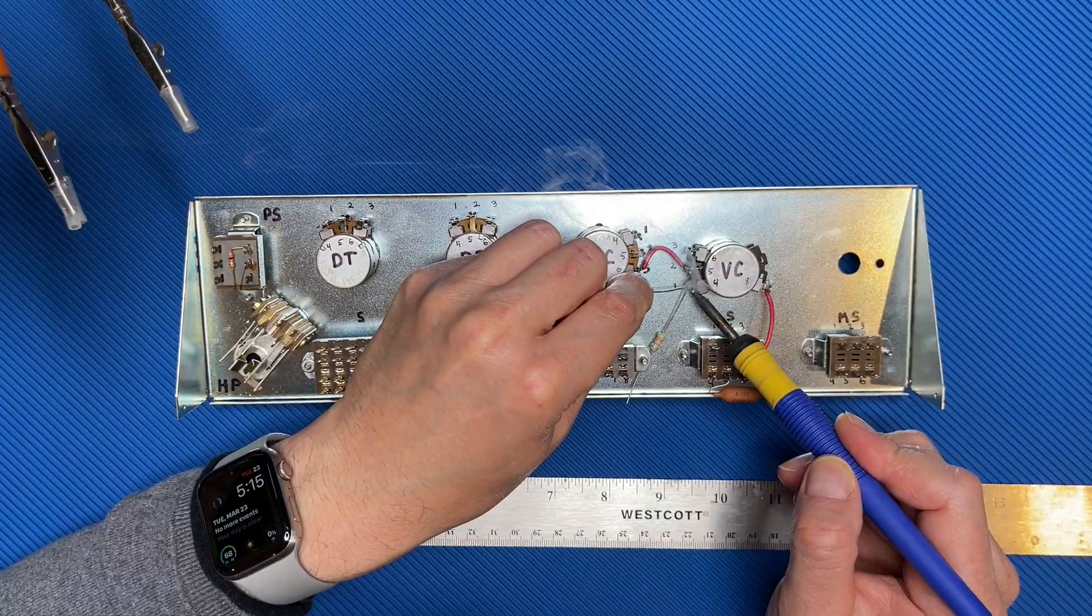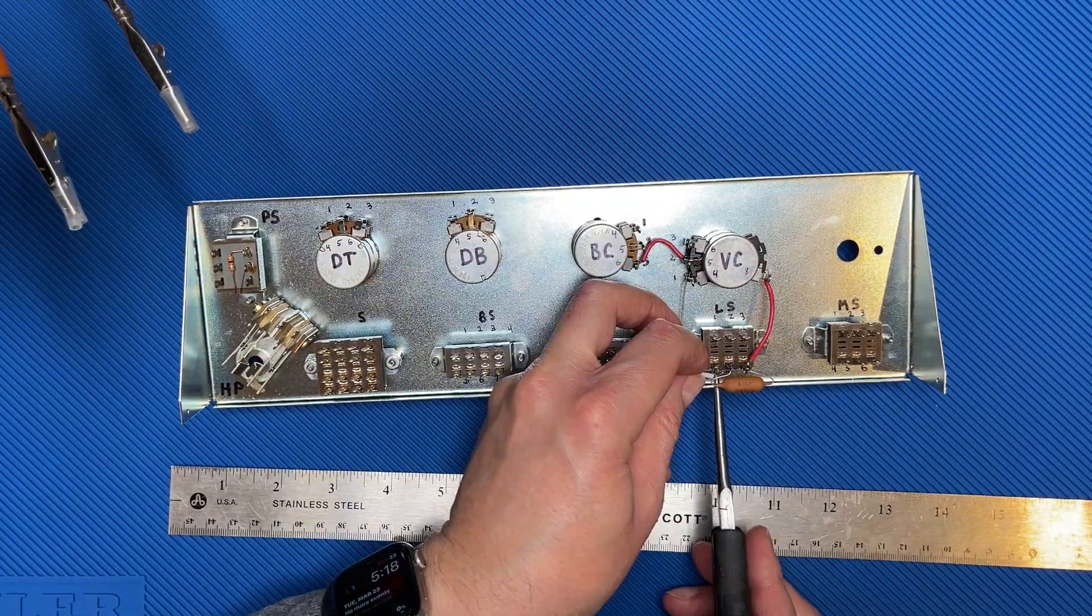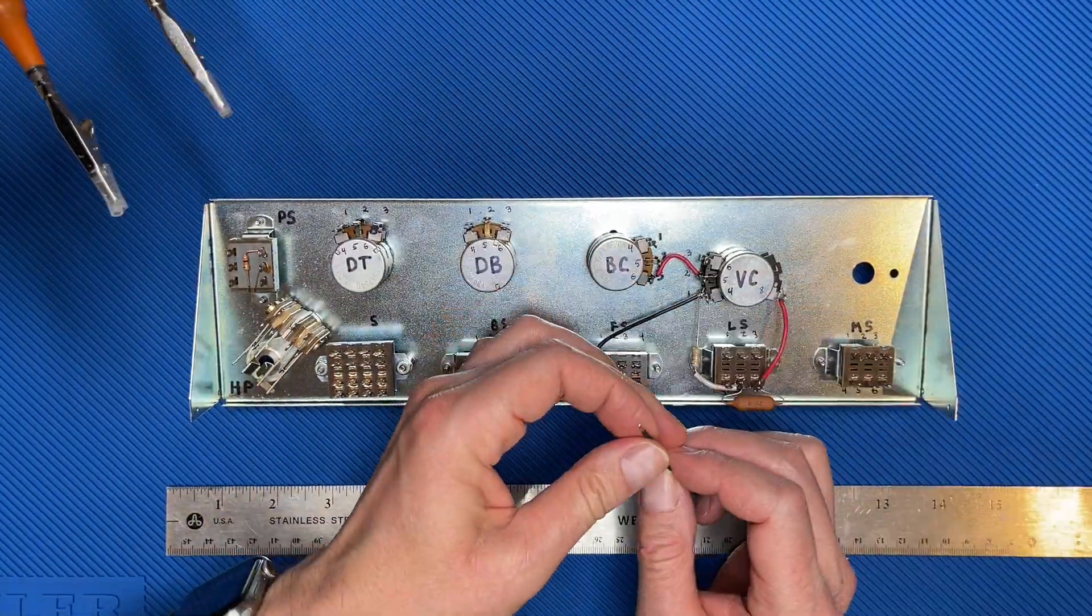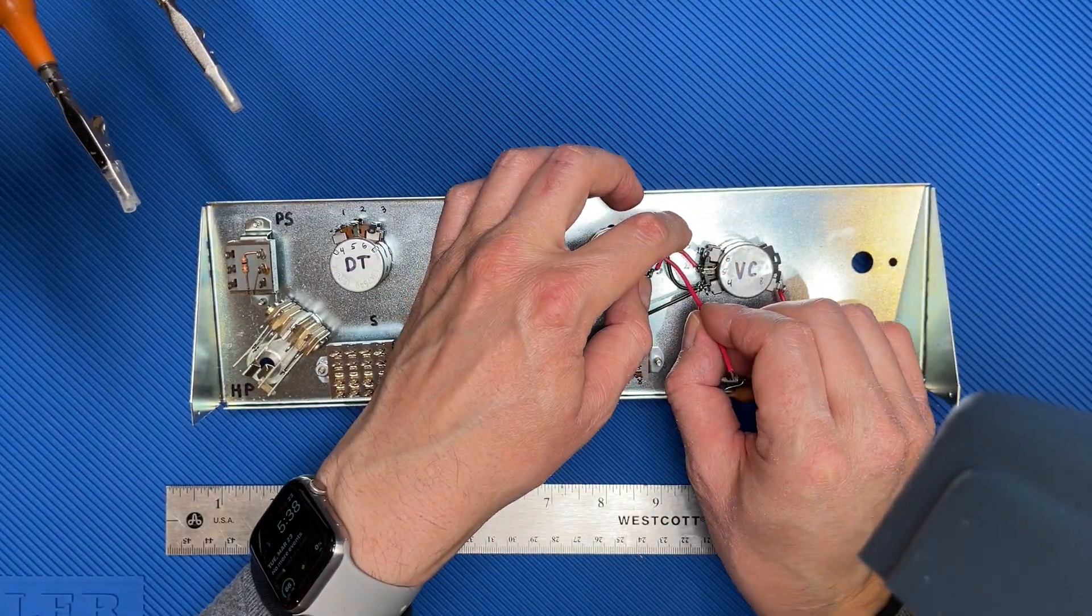Step 4: Install an 18K resistor to VC1 and LS5. Step 4, done. Steps 5 through 44 continue in the same manner as the previous steps, so let's move through those quickly. See you at step 45.